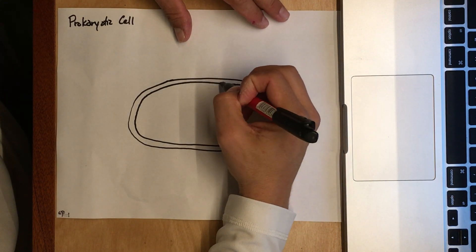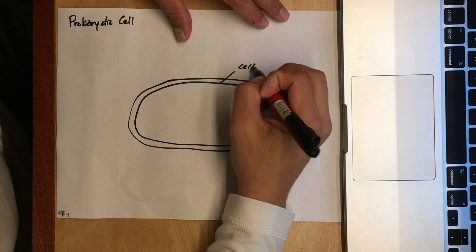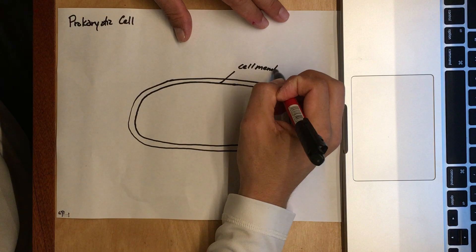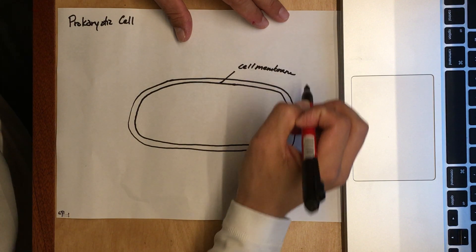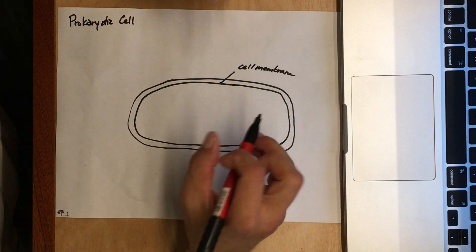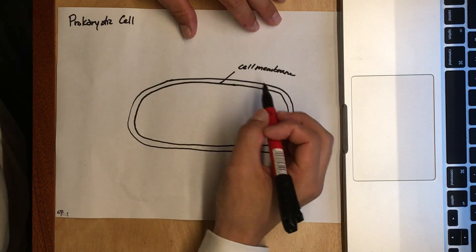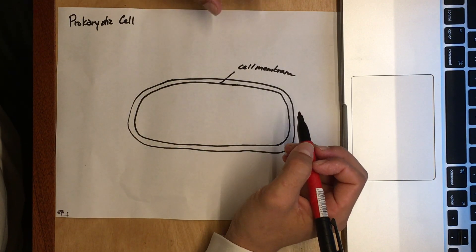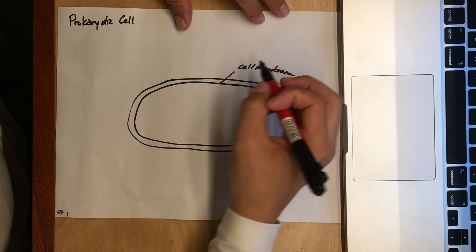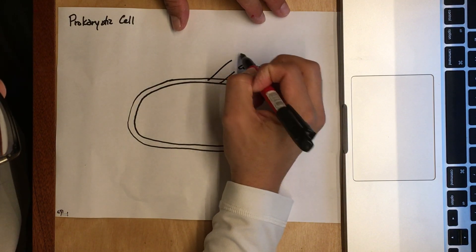First is the cell membrane. All cells have a cell membrane—it doesn't matter if you're talking about eukaryotic, prokaryotic, archaea, plant, animal, whatever. All cells have to have a cell membrane because that's what makes them a cell. Outside the cell membrane is where you'll find the cell wall.